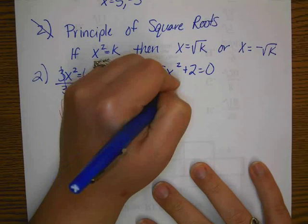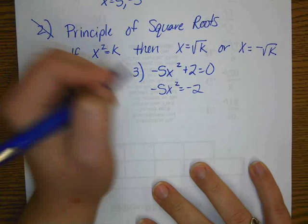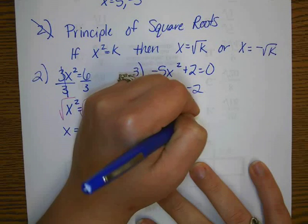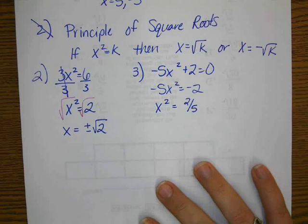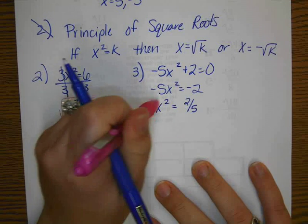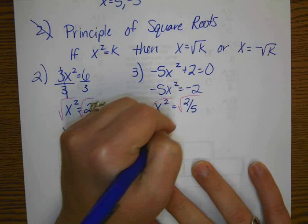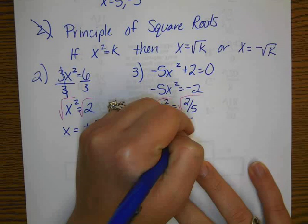So we get negative 5x squared equals negative 2. Divide both sides by negative 5, and we get x squared equals positive 2 fifths. We are square rooting both sides.